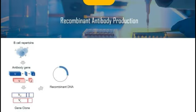Step 2: Transformation. Electroporate the ligation product of VH and VL received in the previous step into cloned expression host cells. In this step, it is very important that highly competent cells of commercial source be recommended to obtain high transformation efficiency.